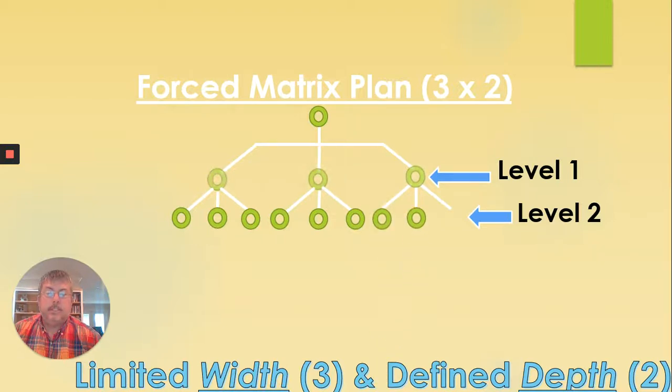Now, the thing with the force matrix is everybody gets put in the matrix in order. So you get signed up and people above you and you start filling in the matrix. Right. So you get three. They might not be yours. They might be yours. These people start signing up. There's a little bit of overflow. Some of them are yours. Some of them are not. When you get to the point where your matrix is filled up, then you're full.